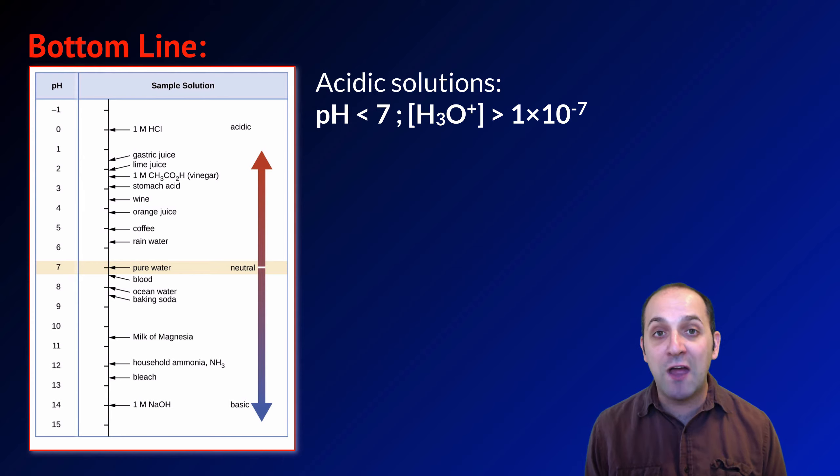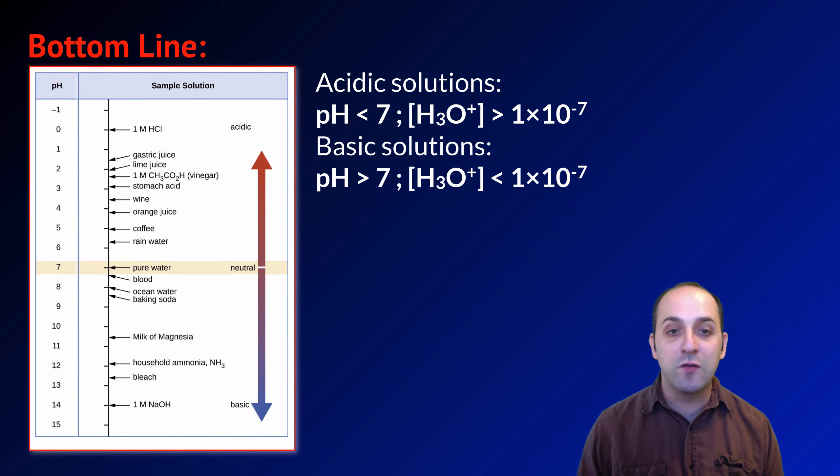For basic solutions, the concentration of hydronium ions has to be less than 1 times 10 to the negative 7. Less than 1 times 10 to the negative 7 is going to cause that exponent to get, quote unquote, higher as it gets to negative 8, negative 9, negative 12, which causes the pH to be 8, 9, 12, and so forth. The pH of a basic solution has to be greater than 7.